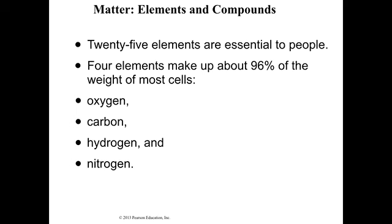Most of those 92 elements are not particularly relevant to life — you're not going to find a whole lot of francium, einsteinium, or uranium in a biological system. There are 25 elements that are essential to living things. Of those 25, most of you is made of four of them. These four elements make up 96% of the weight of most cells in your body. The big four — and you need to know them — are oxygen, carbon, hydrogen, and nitrogen, abbreviated O, C, H, and N.